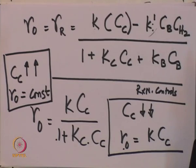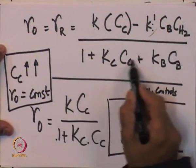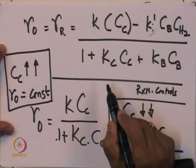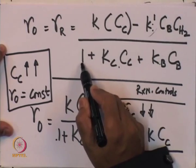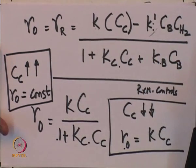At high temperatures, adsorption is less favored and desorption is favored, so adsorption constants decrease. If the adsorption-related terms in the denominator become negligible at high temperature, the rate equation reduces to a simple form similar to homogeneous catalysis — the denominator approaches unity.